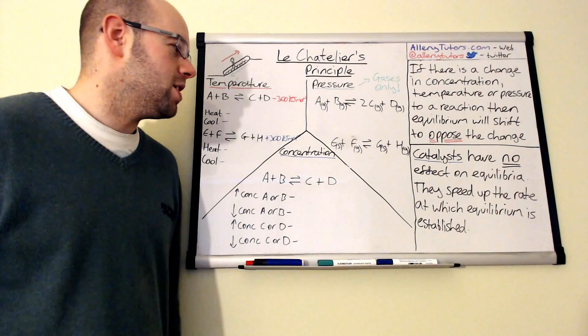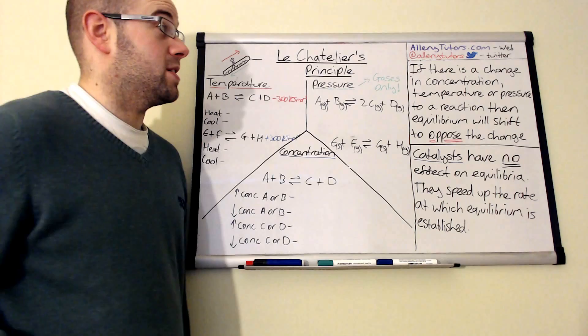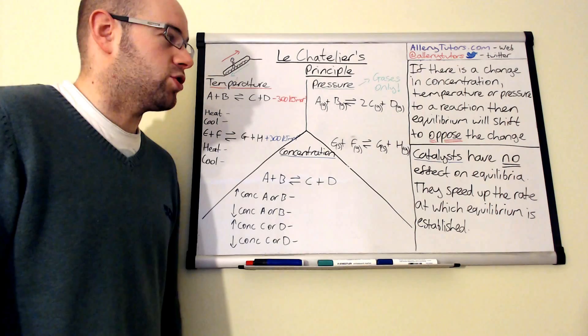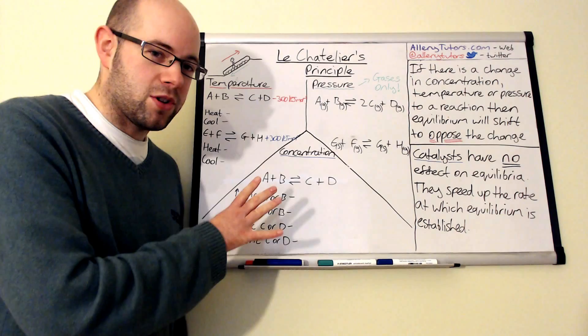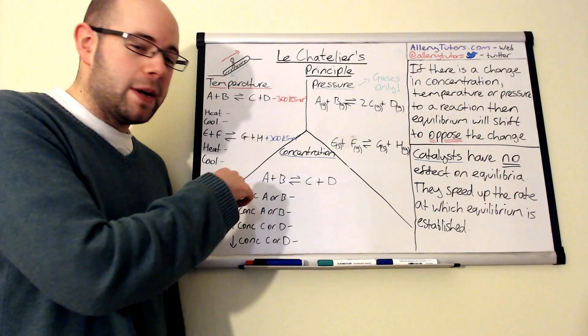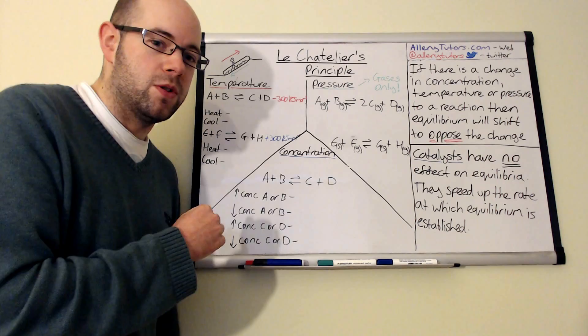Le Chatelier's principle states that if there's a change in concentration, temperature, or pressure to a reaction, then equilibrium will shift to oppose the change. It's rather like a very annoying person — when you tell that person to do one thing, they'll do the complete opposite. So equilibrium reactions will oppose a change you impose on them. We're going to look at the conditions involved and talk about which way equilibrium is going to move.